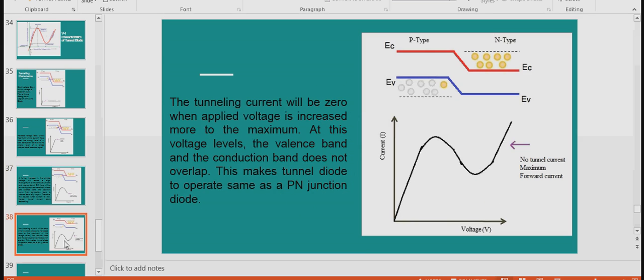A tunneling current will be zero when applied voltage is increased more to maximum. At this voltage level the valence band and the conduction band does not overlap. This makes tunnel current to operate same as P-N junction diode. So once it reaches the valley point, after that there is zero possibility of overlapping of conduction band of n-type semiconductor and the valence band of P-type semiconductor. After the valley point, it will behave like an ordinary P-N junction diode, forward biased P-N junction diode.